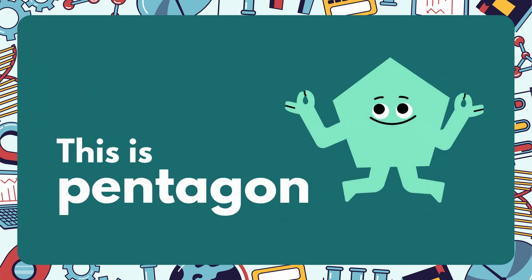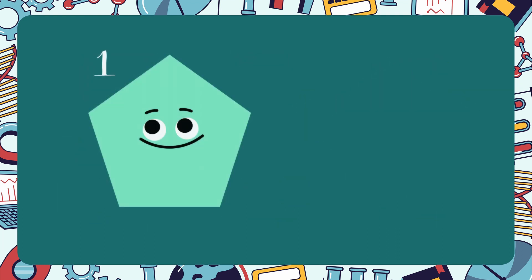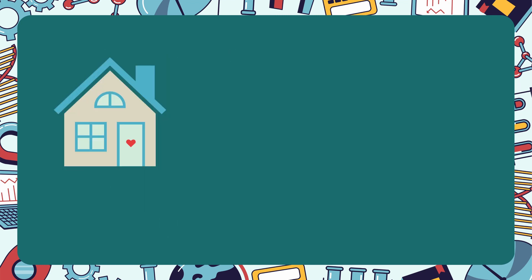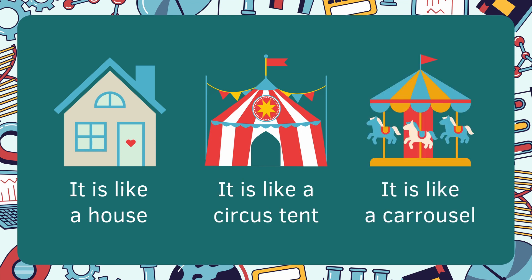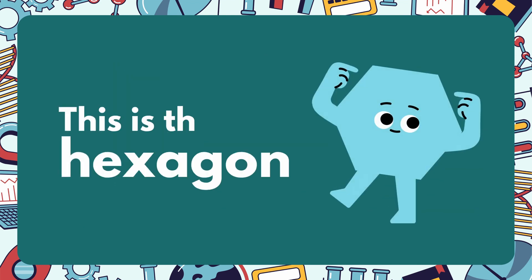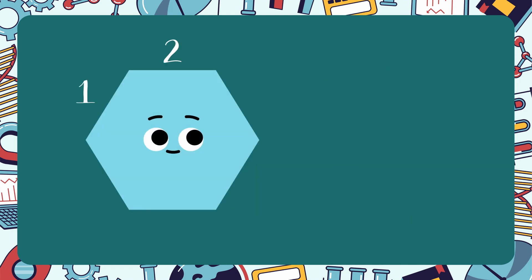This is the pentagon: one, two, three, four, five. It has five sides. It is like a house, it is like a circus tent, it is like a carousel. This is the hexagon: one, two, three, four, five, six.